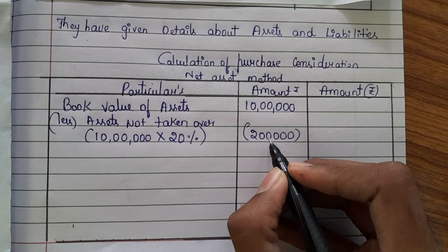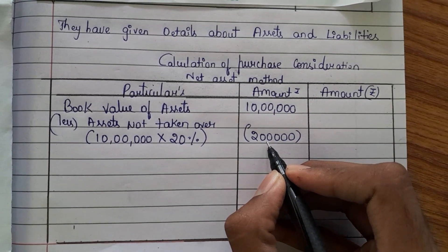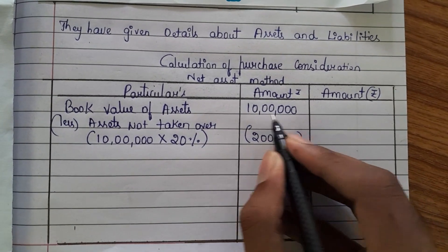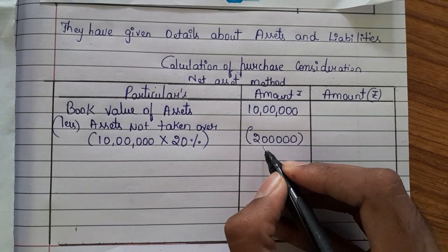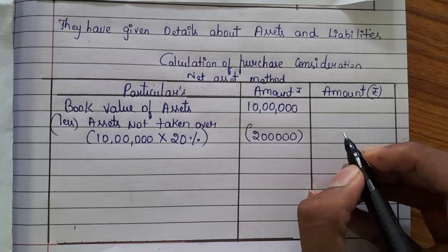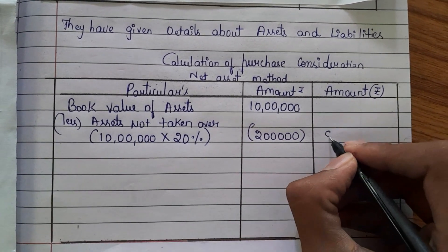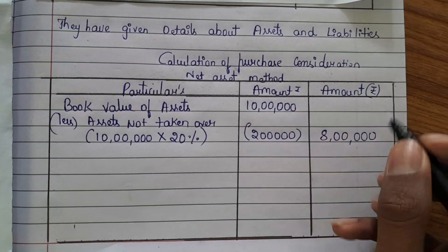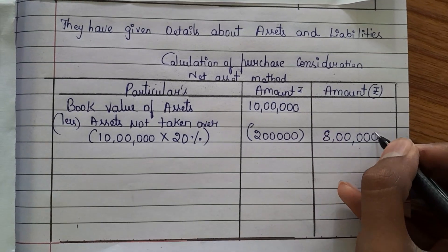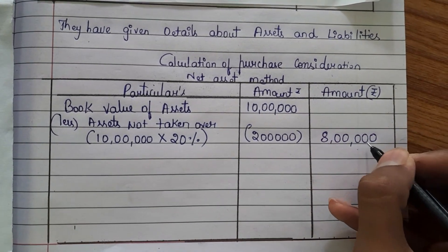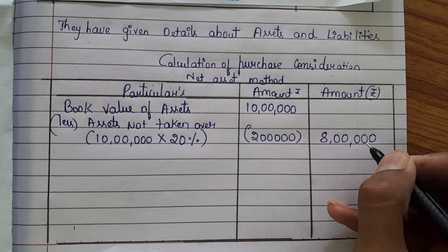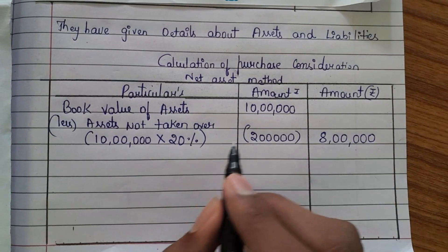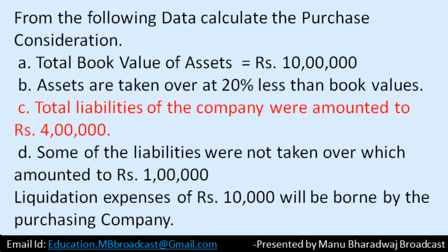Out of 10 lakh, they are not taking 2 lakh worth of assets. That means, out of 10 lakh, they are taking only 8 lakh of assets, and 2 lakh worth of assets they are not taking over.